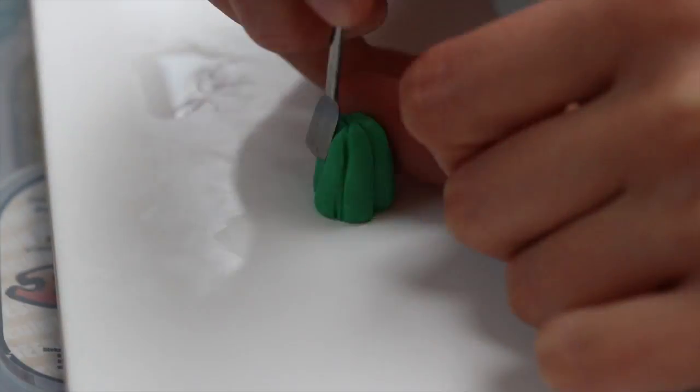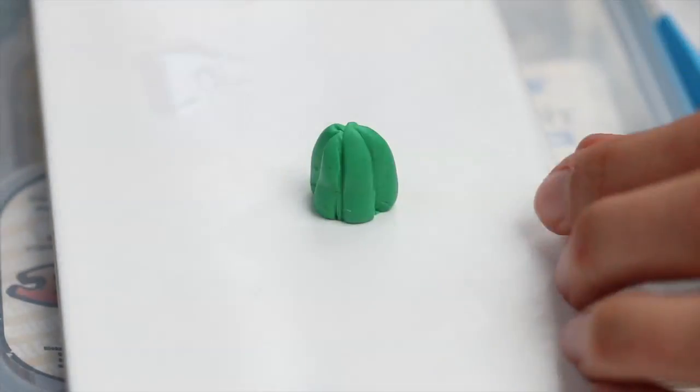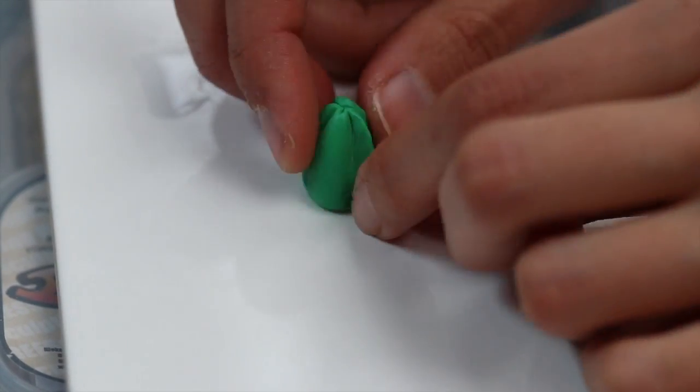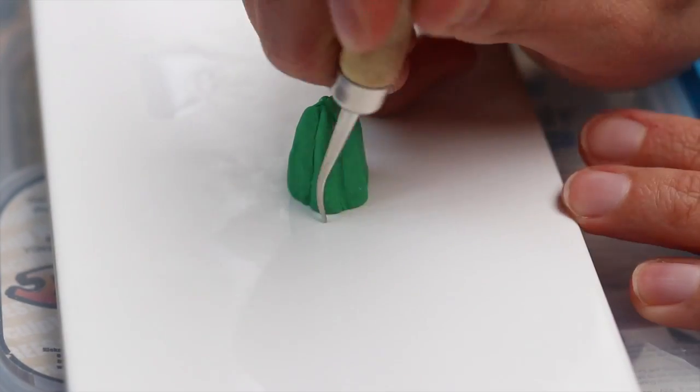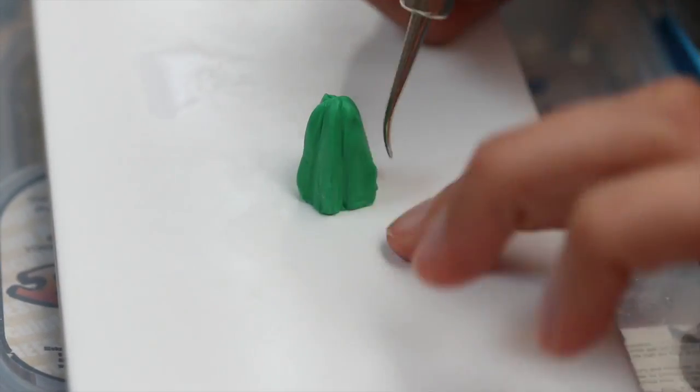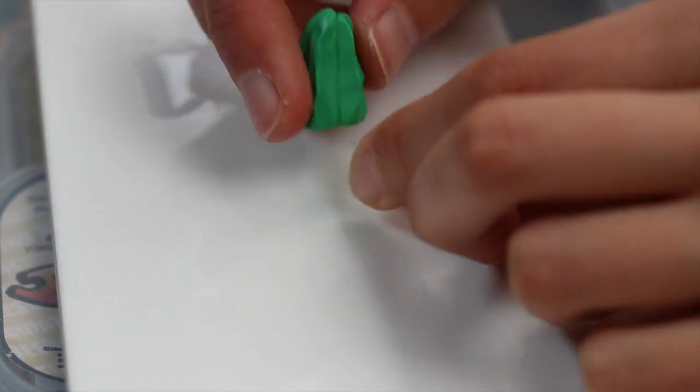And like the other ones I basically created some edges all around. I originally divided the cactus in five but ended up adding a few more because it just didn't look quite right. And like the one before I also pinched all the sides to add some edges.